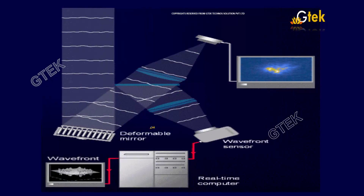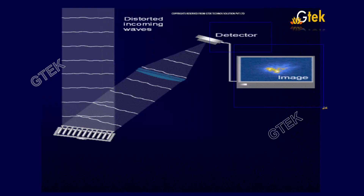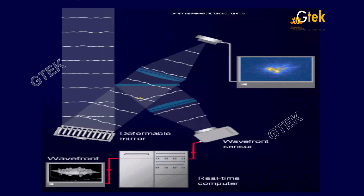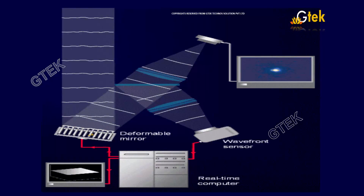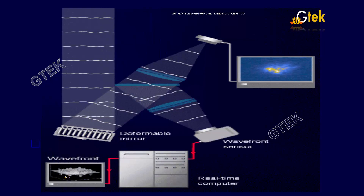Here you can see how the deployment works. This is a real-time computer, and you can see the wavefront sensor here and this is the deformable mirror. The detector over here has detected an image. The distorted incoming waves are passed on to the deformable mirror, where you can see the wavefront being corrected, and an image is produced.